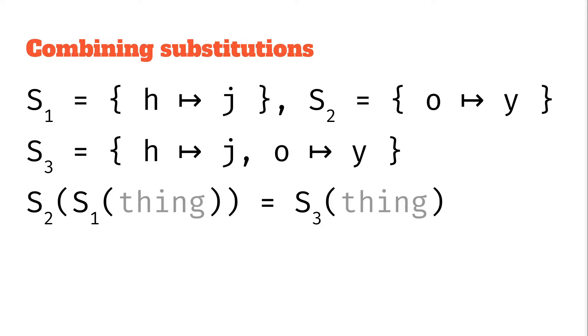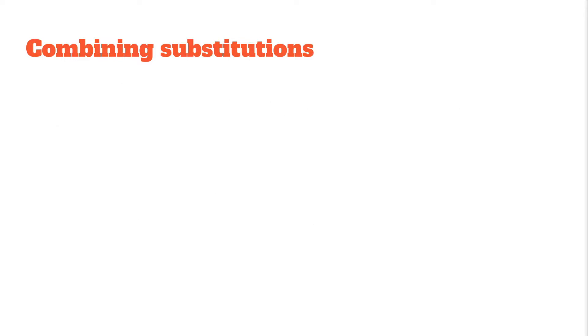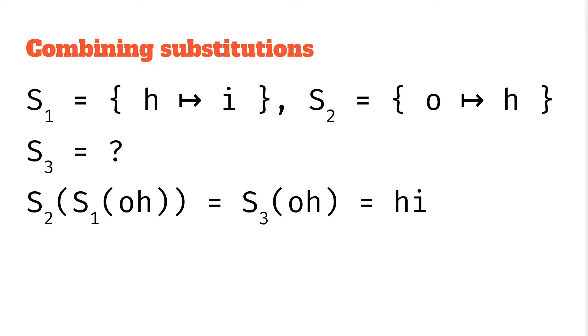Just to let that sink in let's do another example. We have substitution 1 h to i, substitution 2 o to h. When you apply s1 and then s2 on the string oh, you apply s1 that takes the h to an i so you get oi. Then we apply s2 on oi and that takes the o to an h and you get hi. If we look at how these letters have been mapped the o turned into an h, the h turned into an i. So again it's just like unioning the two substitutions.